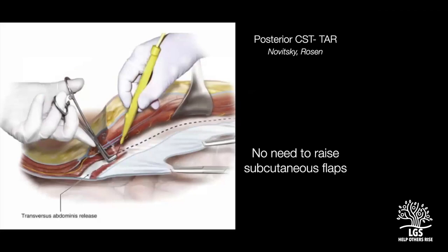The disadvantage of anterior component separation is that the skin overlying the rectus muscle is supplied by perforators coming from the arborization of the superior epigastric vessels within the rectus muscle. This tree-like formation is divided when raising the subcutaneous flap to reach the linea semilunaris, causing the flap to become ischemic and undergo necrosis. This flap ischemia is the major disadvantage of anterior component separation technique.